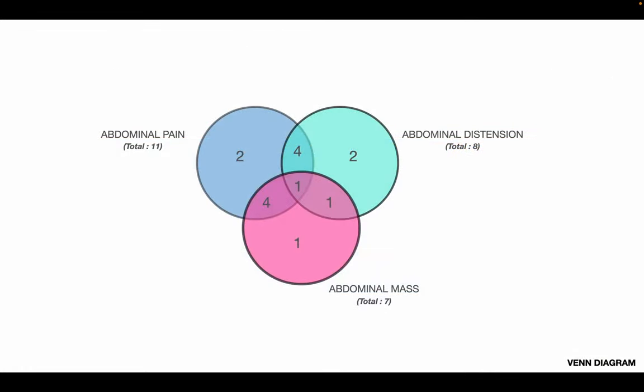Out of 13 EPS patients, 2 presented only with abdominal pain, 2 with abdominal distension, and 1 with abdominal mass. Four patients had abdominal pain with distension, 4 had abdominal pain with abdominal mass, 1 had abdominal distension and mass, and 1 patient had all three symptoms.